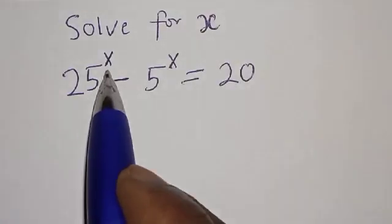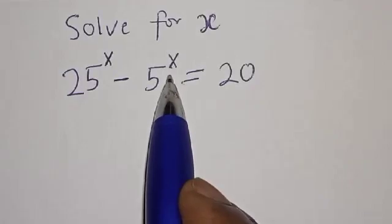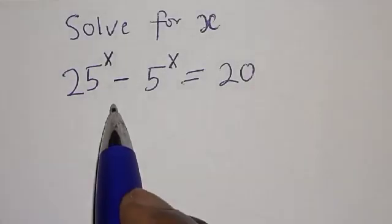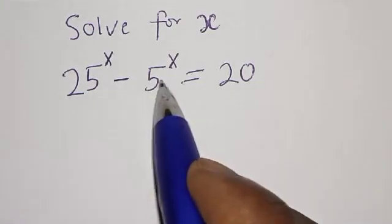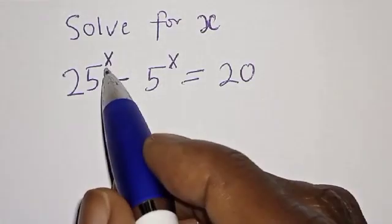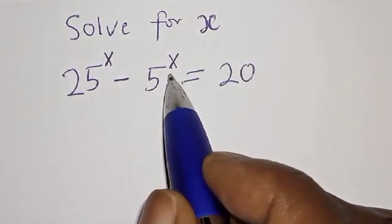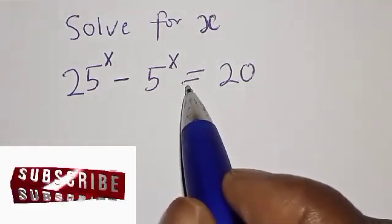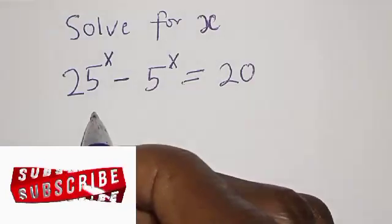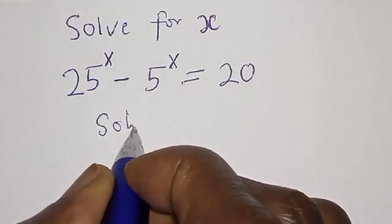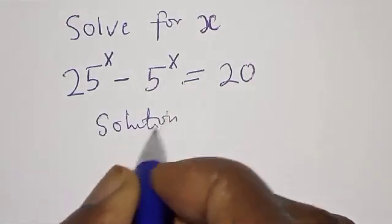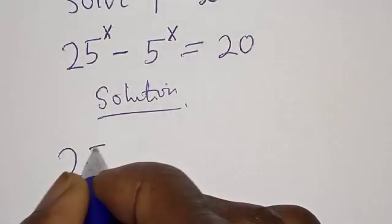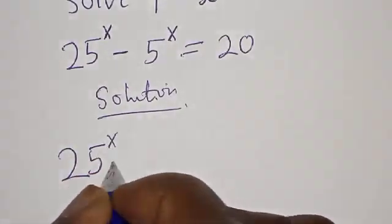Solve for x: 25 raised to power x minus 5 raised to power x is equal to 20. Hi everyone, welcome to my class. In this class we want to find the value of x from this given equation. But before we proceed, please don't forget to like, share, comment and subscribe.